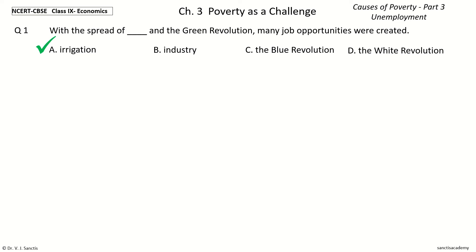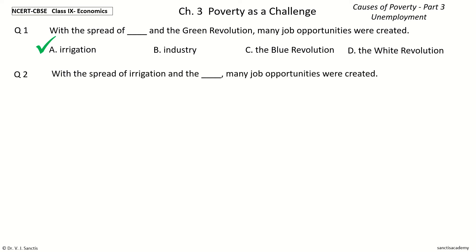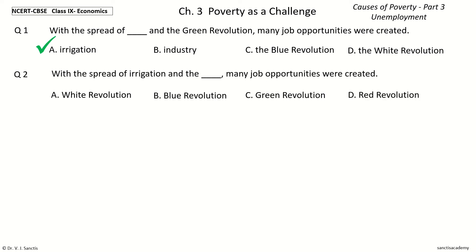Question 2: With the spread of Irrigation and the Dash, many job opportunities were created. The options are: White Revolution, Blue Revolution, Green Revolution, Red Revolution. Your time to choose. And the answer is Green Revolution. So, with the spread of Irrigation and the Green Revolution, many job opportunities were created.